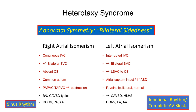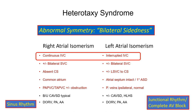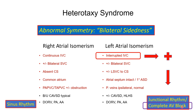The most consistent and reliable method of discerning between right atrial isomerism and left atrial isomerism is the continuity of the inferior vena cava. There is a continuous IVC always with right atrial isomerism, and usually an interrupted IVC with left atrial isomerism — almost always interrupted. An interrupted IVC with the presence of complete heart block is an absolute indicator that this fetus most likely has left atrial isomerism.